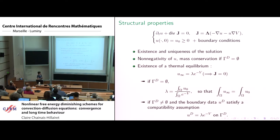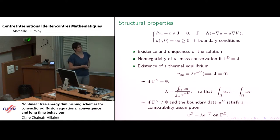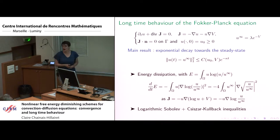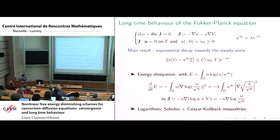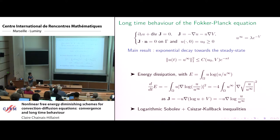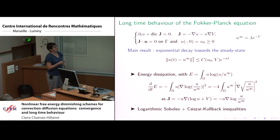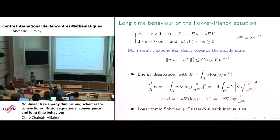For no-flux or Dirichlet boundary conditions at thermal equilibrium, we have the existence of thermal equilibrium. I am interested in the long-time behavior of the Fokker-Planck equation. This problem has been widely studied, and for the kinds of boundary conditions shown, we are able to prove the exponential decay of the solution towards the steady state, with constants C and kappa depending only on the data, giving decay in L1 norm of U(t) to U_infinity.